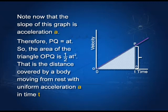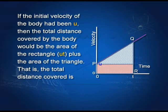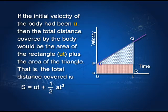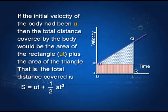Up to time t, the distance covered is given by the area of the triangle under the velocity-time graph. The height PQ equals at, where a is the slope of the graph — acceleration is the slope of the velocity-time graph. Therefore PQ = at, and the area of the triangle is ½ × t × at = ½at². If the body started with initial velocity u, we add the rectangle of area ut, giving us the formula: distance covered = ut + ½at².